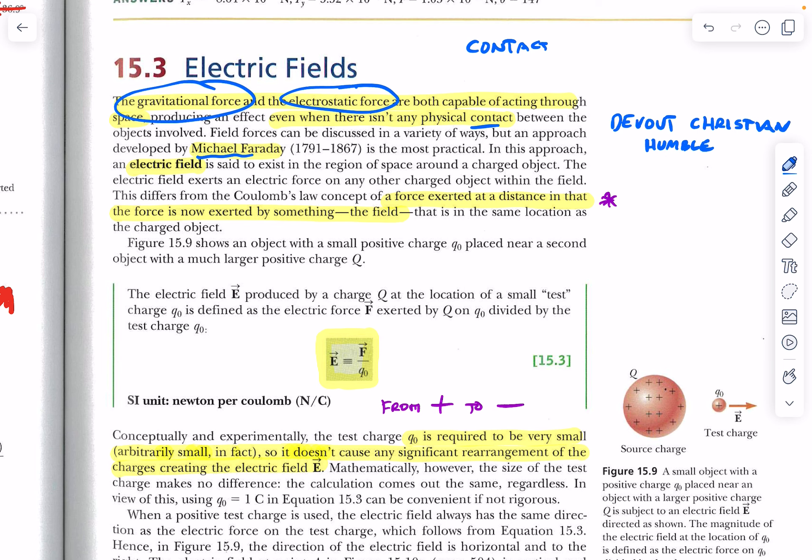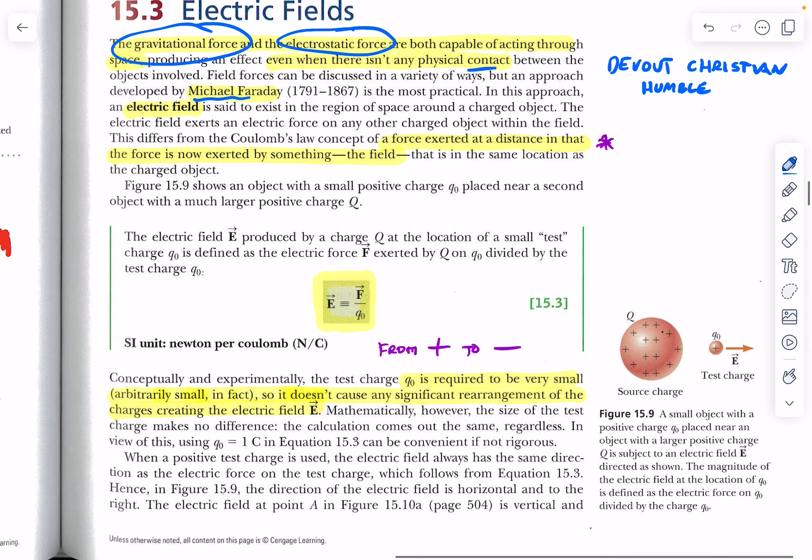And a couple important points here. It acts at a distance, and we call that acting at a distance without being in physical contact a field. And now we need to have ways to take this mental model and represent it somehow on paper or on projection. And you're going to see us drawing field lines. You'll be drawing field lines in a little bit.